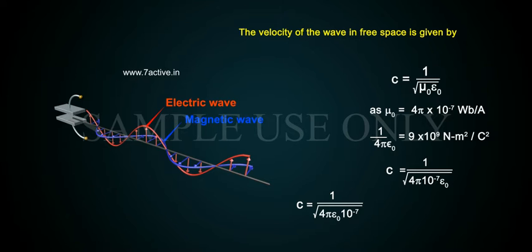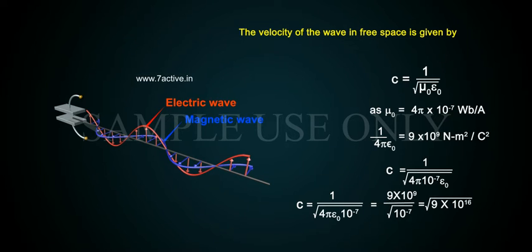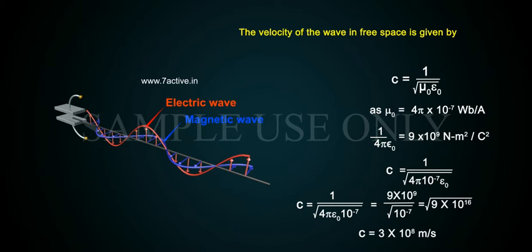Continuing the calculation: this equals the square root of 9 × 10⁹ over the square root of 10⁻⁷, which equals the square root of 9 × 10¹⁶. Therefore, C equals 3 × 10⁸ meters per second.